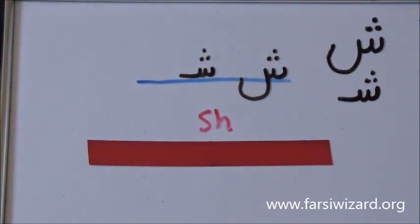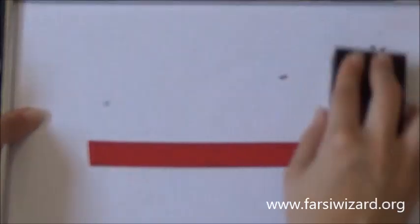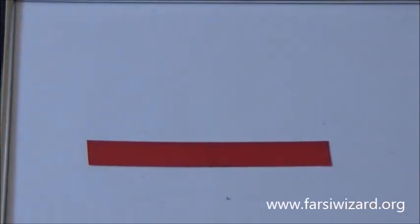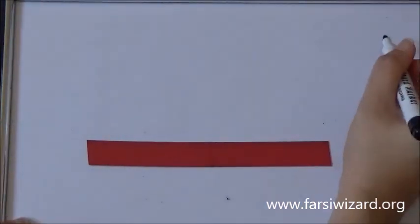Shin. The big version and the small version. So for sh, we have one particular letter in the alphabet to represent the sound sh and it is called shin.